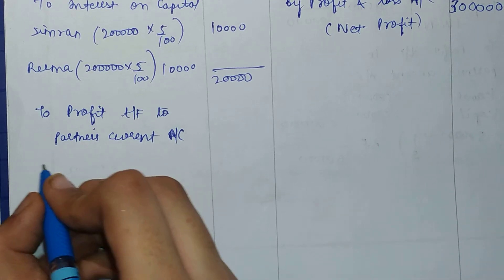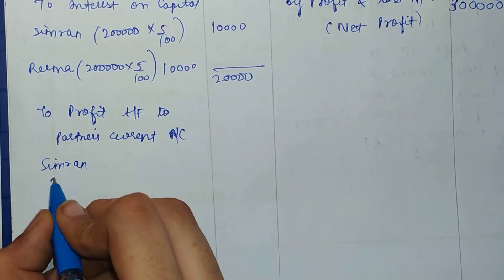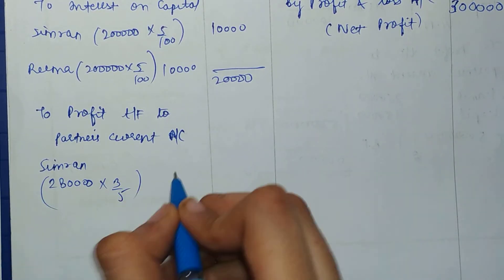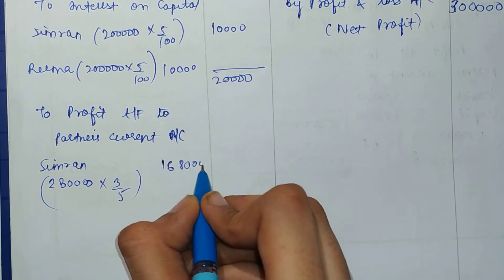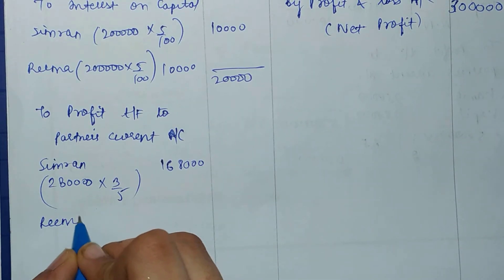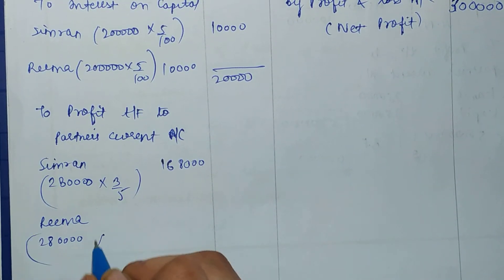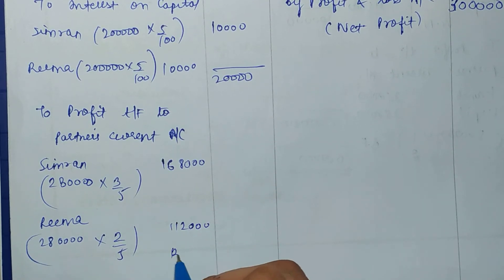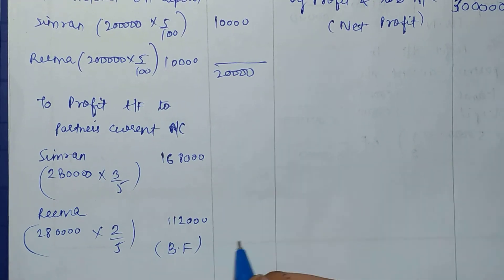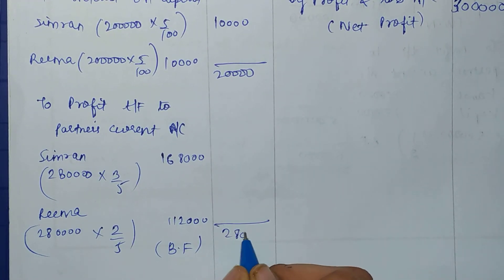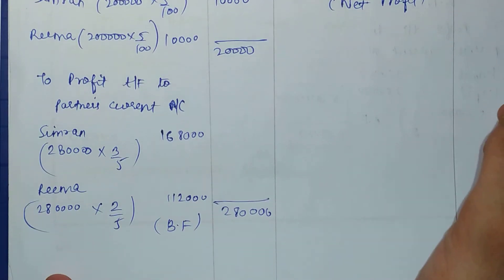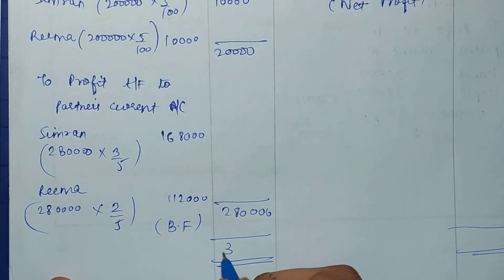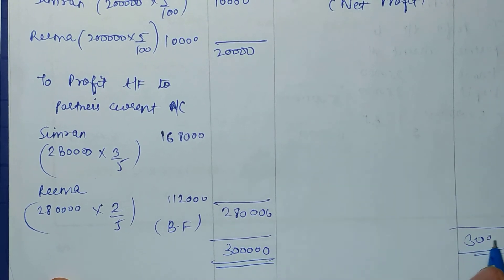After deducting the interest on capital of ₹20,000 from the net profit of ₹3,00,000, the remaining profit is ₹2,80,000. This is distributed in the profit-sharing ratio of 3:2. Simran gets 3/5 × ₹2,80,000 = ₹1,68,000, and Reema gets 2/5 × ₹2,80,000 = ₹1,12,000. The Profit and Loss Appropriation Account totals ₹3,00,000 on both sides.